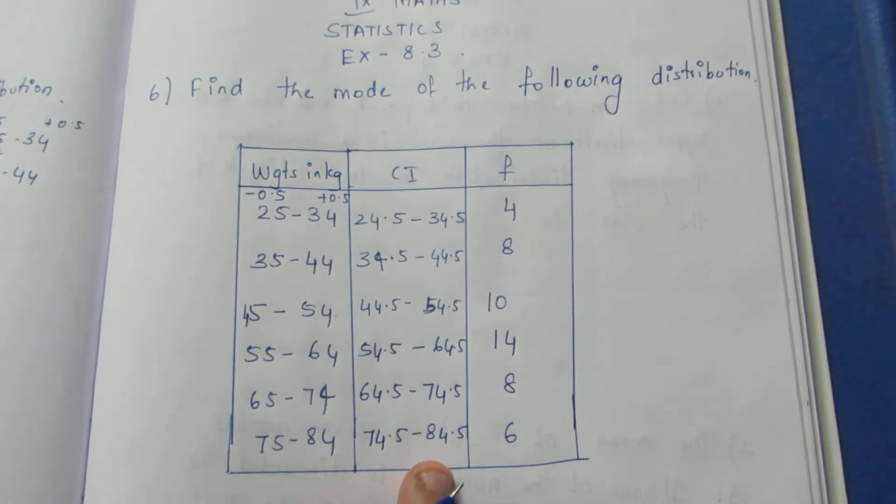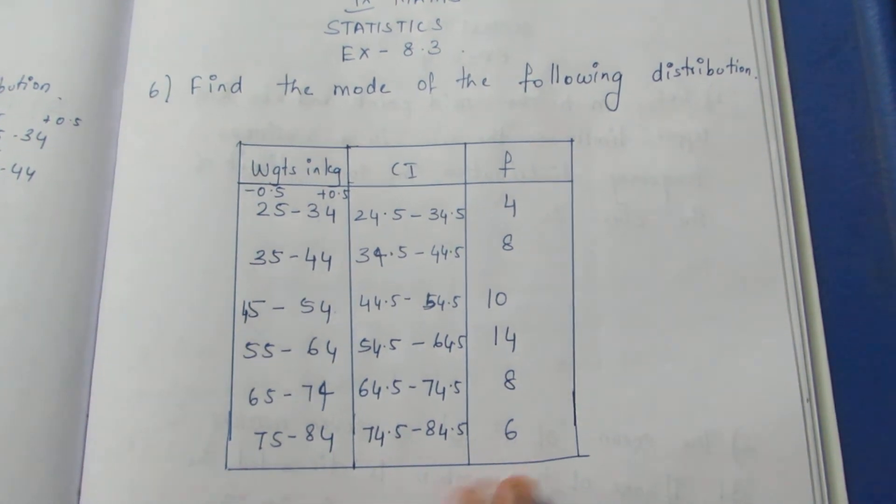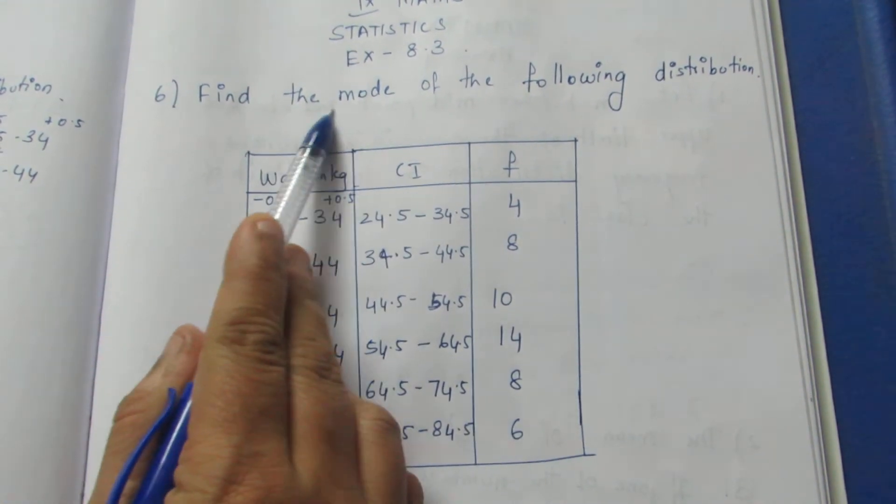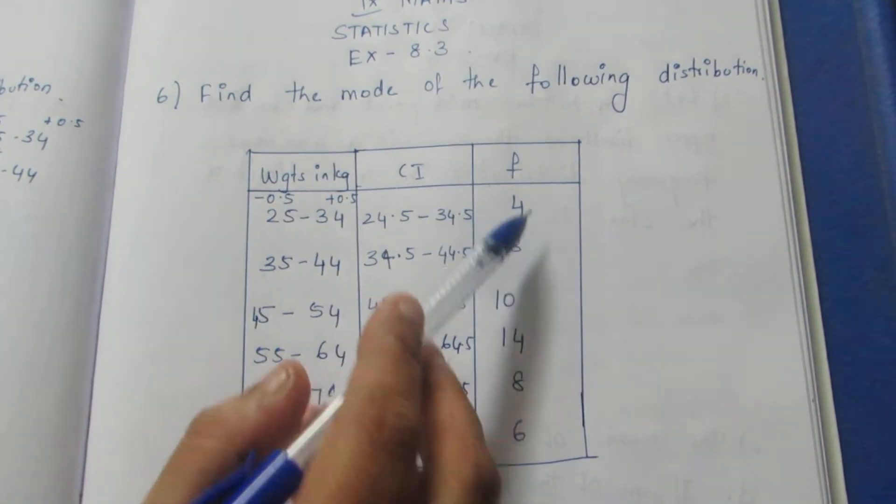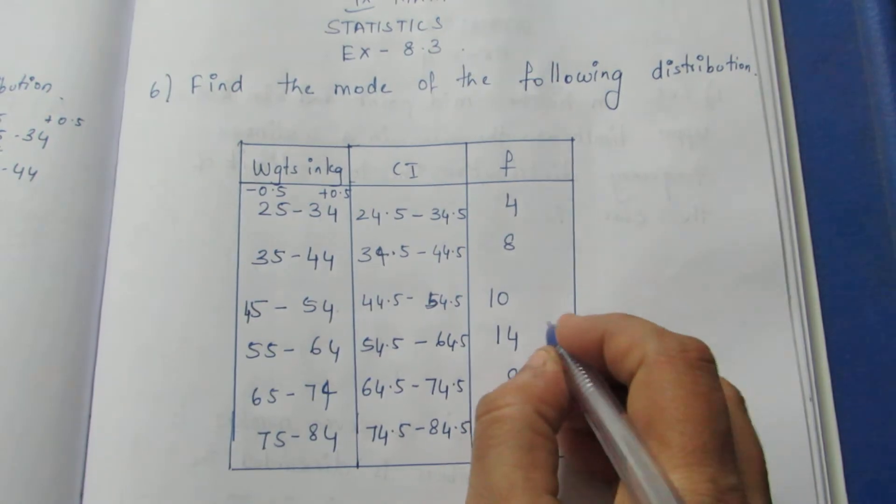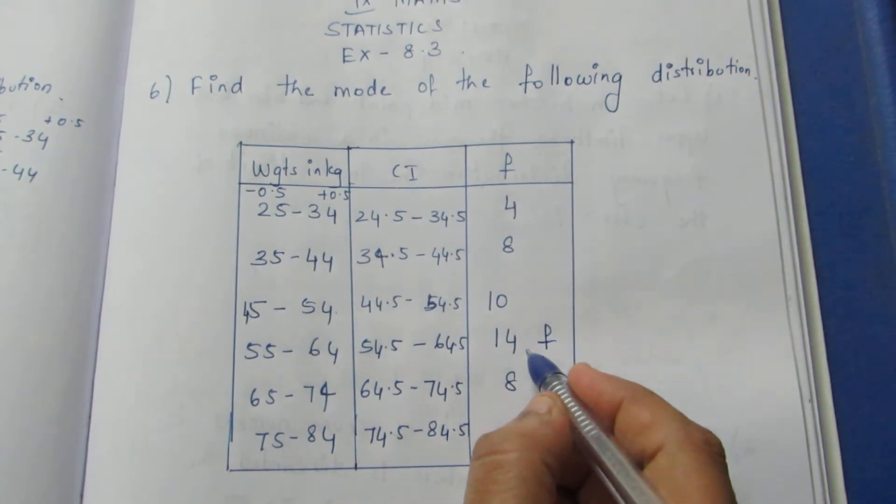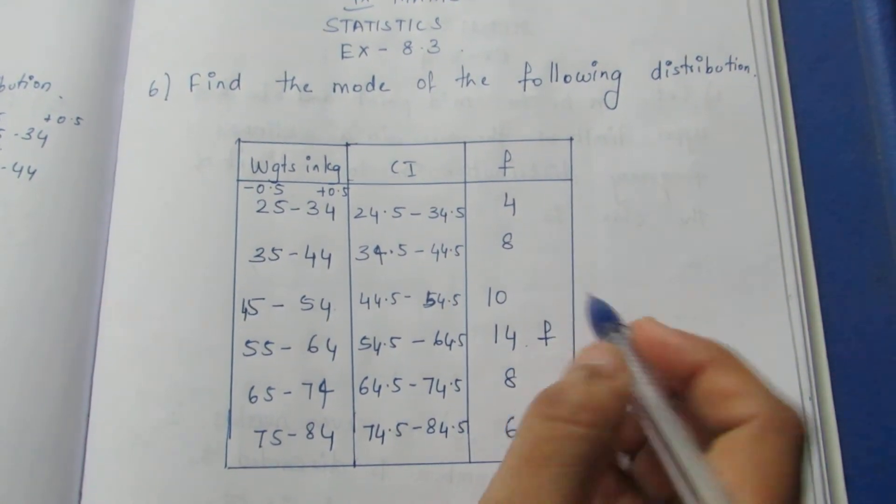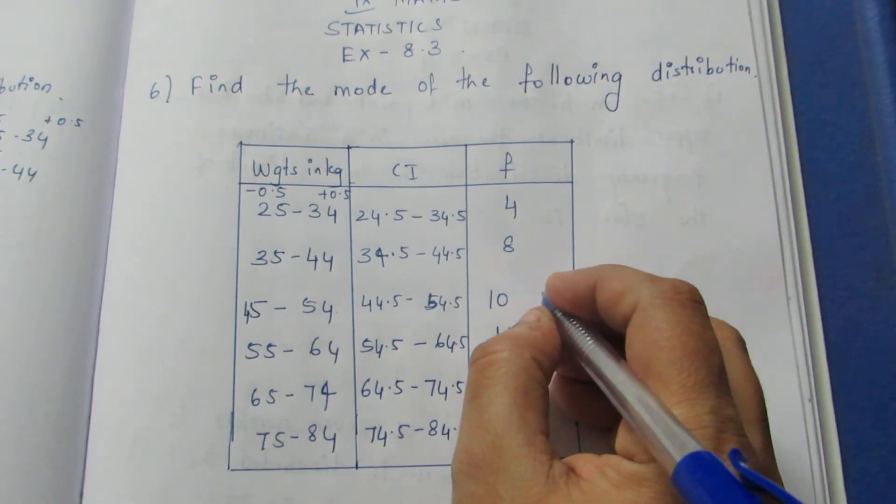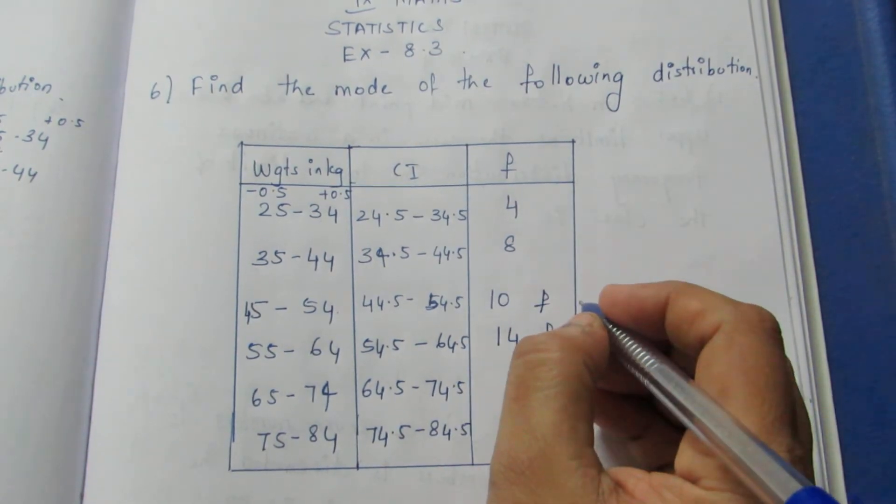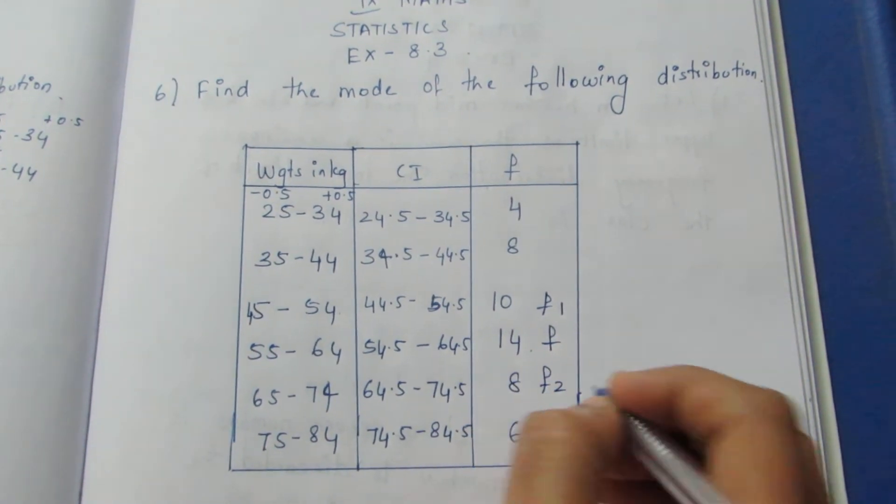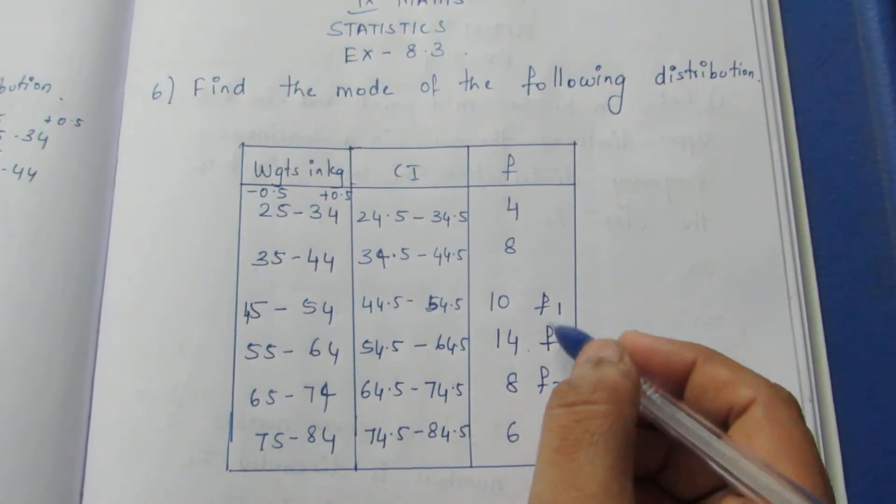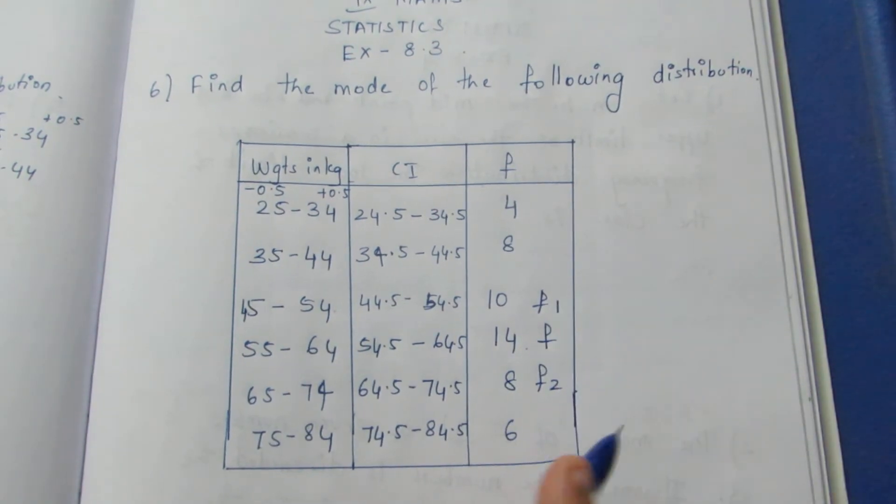Now let's look at this. Mode. Mode is the class with the highest frequency. That's the mode. Frequency is the highest number. So that's the mode. How do we write? F1, F2. This is F1, F2.